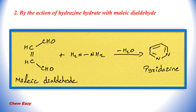In another method, pyridazine can be synthesized by the action of hydrazine hydrate with maleic dialdehyde, as shown in this reaction. Maleic dialdehyde reacts with hydrazine and produces pyridazine.